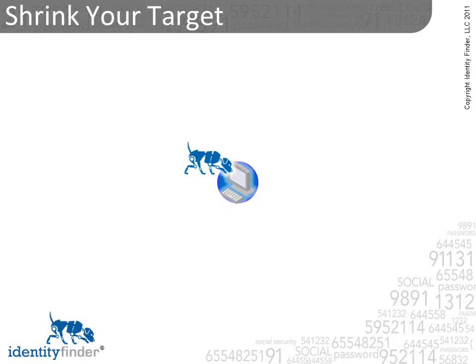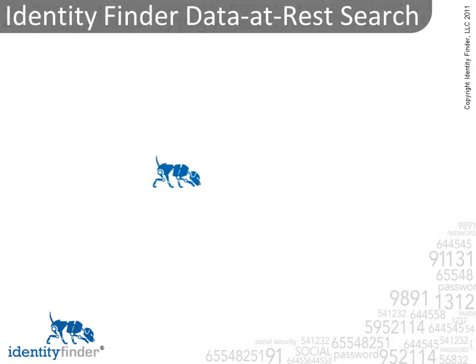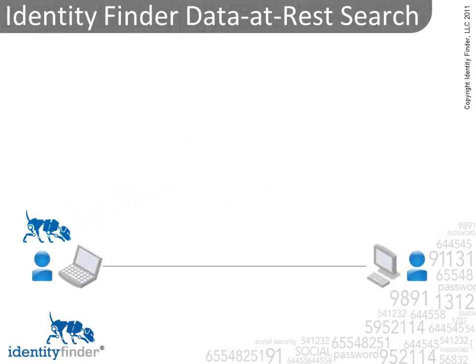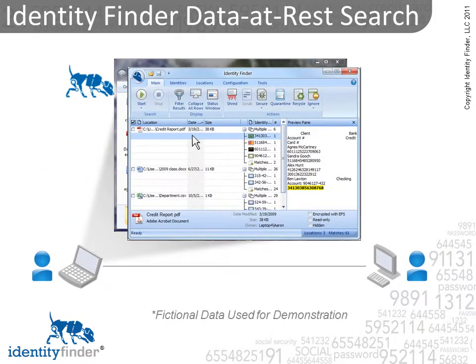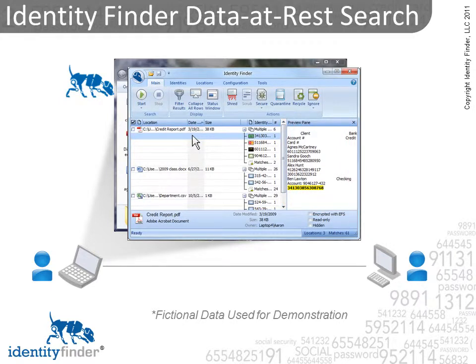This saves you money on audit and compliance costs, and it means that you have a smaller target to defend. Should a breach of your system occur, Identity Finder will have secured the valuable information, minimizing your liability. Identity Finder performs in-depth searches of your data where it's stored, searching your hard drive and showing you all locations with sensitive data. You can even view the information in the preview pane without digging through your file system to find the file.